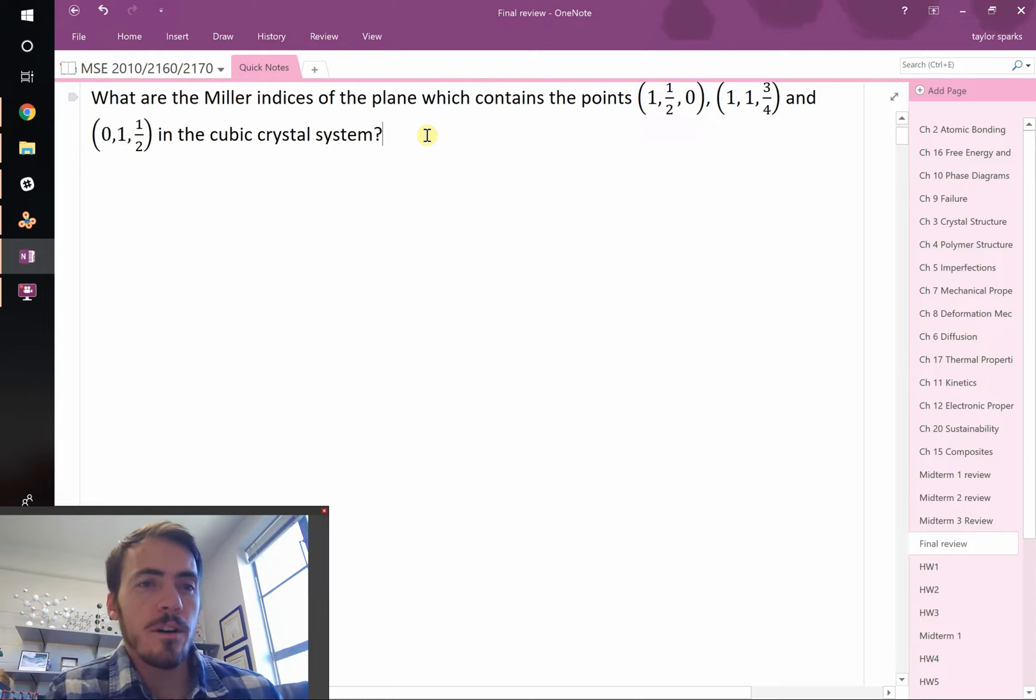Okay, this question states the following: what are the Miller indices of the plane which contains the points (1, 1/2, 0), (1, 1, 3/4), and (0, 1, 1/2) in the cubic crystal system?